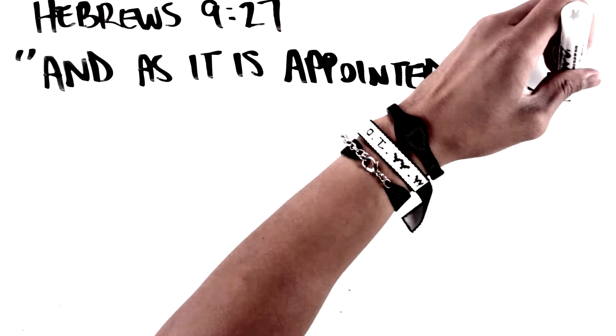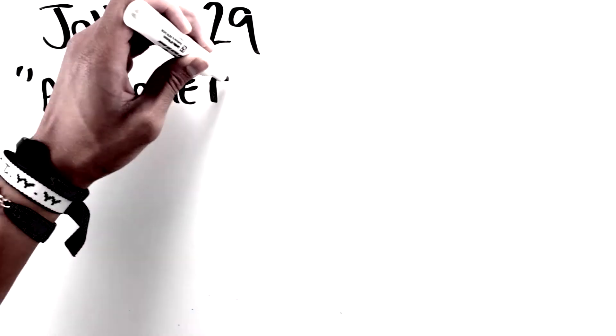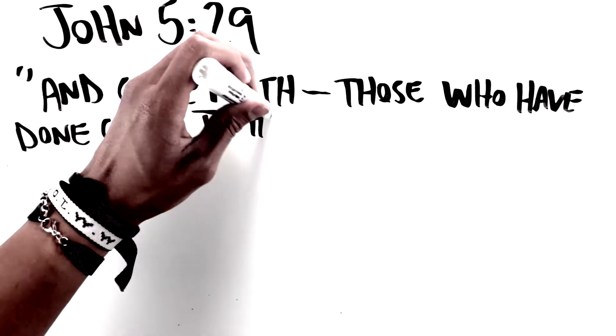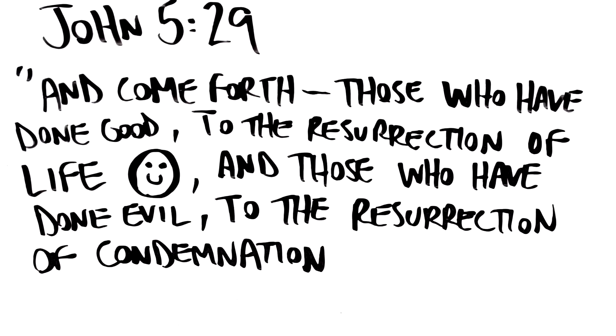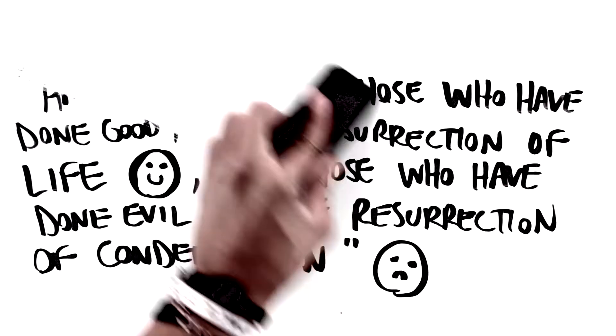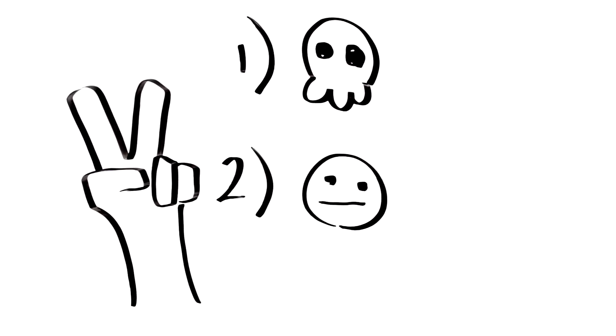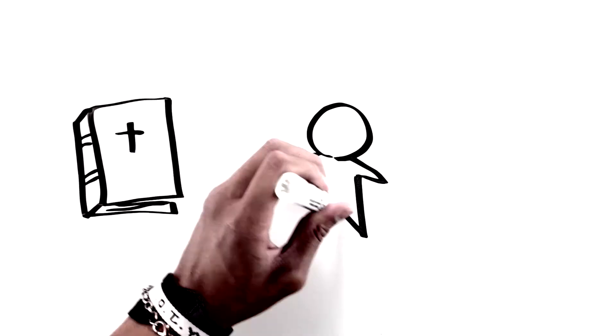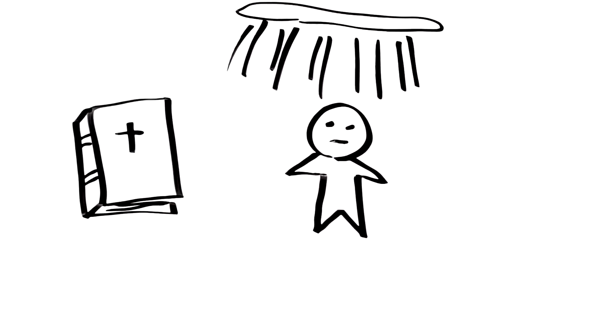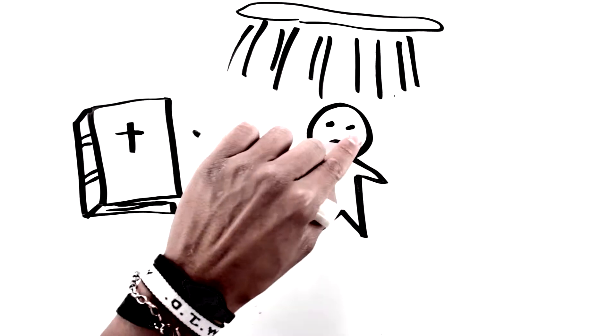Check these verses out, Hebrews 9:27, and as it is appointed for men to die once, but after this, the judgment. John 5:29, and come forth those who have done good to the resurrection of life and those who have done evil to the resurrection of condemnation. From these passages, we know two things, you're going to die, and you're going to resurrect when you die, either to life or to condemnation. So if the Bible is true, regardless if you're a Christian or not, you're going to heaven or hell. And it's clear that people can be saved from hell.